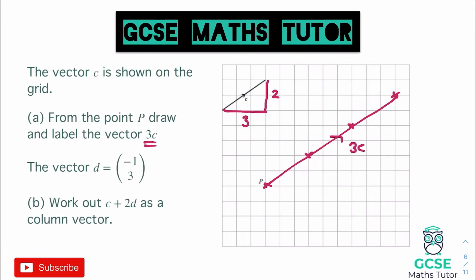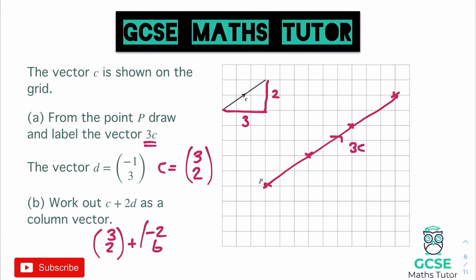We've been given vector D as a column vector, but vector C we haven't been given as a column vector, so let's write that down. C equals 3 on the top — it was 3 across — and 2 on the bottom — it went 2 up. Now we do one C and add 2 of the Ds: so 3 over 2, plus 2 lots of D, which gives minus 2 on the top and 6 on the bottom.